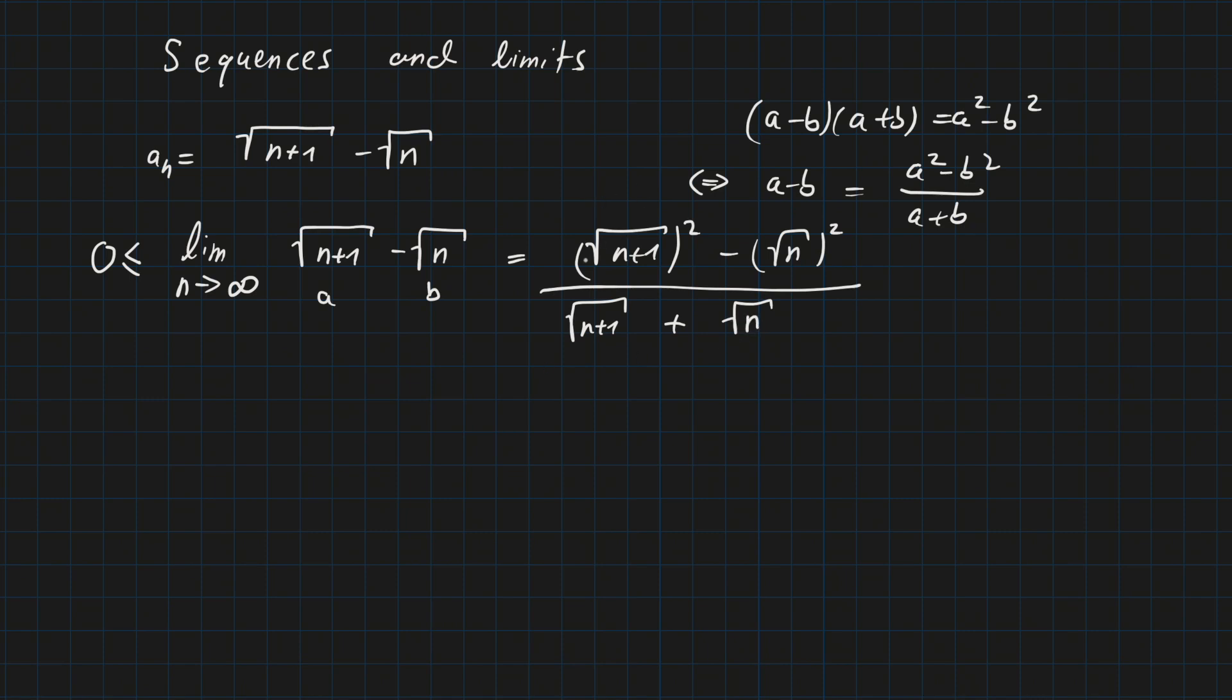So obviously the square root and the square, they cancel both out here. So we can simplify this a little bit more into n plus 1 minus n divided by square root of n plus 1 plus square root of n.